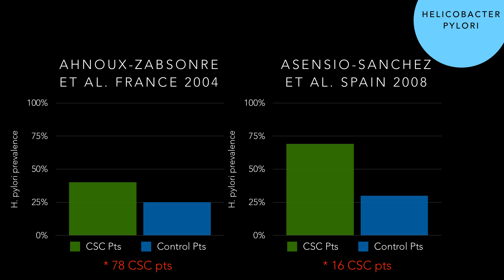H. pylori is also associated, though we're not sure what to make of it. Back in 2004 in France, they looked at 78 central serous patients and found 40% had H. pylori versus 25% in controls. In Spain, four years later, they found 69–70% of central serous patients — a smaller group of 16 — had H. pylori versus only 30% in controls. We don't really know what to make of this, and I believe I saw a study where treating H. pylori in central serous patients didn't affect clinical outcome.